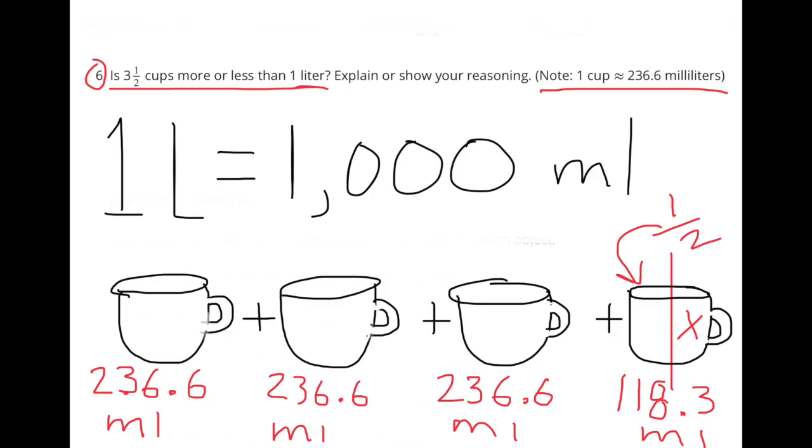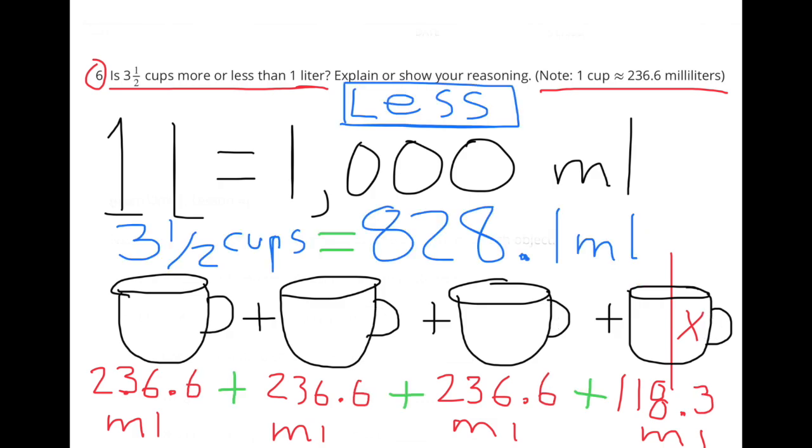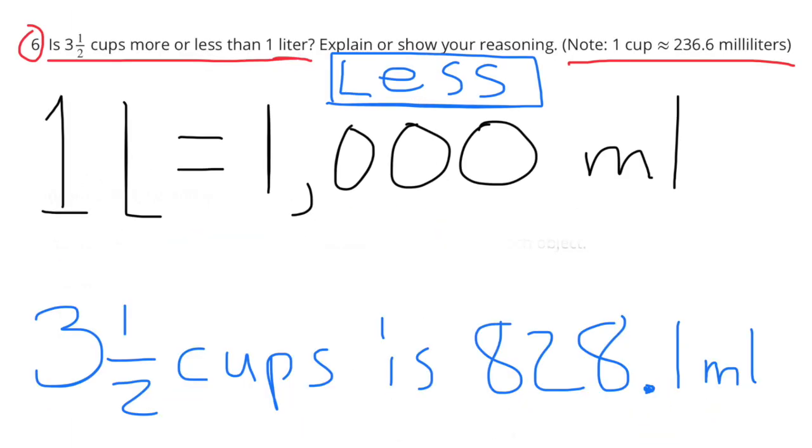When you add all those milliliters up, the 3.5 cups holds 828.1 milliliters, and that's actually less than 1 liter, because 1 liter is actually 1000 milliliters. 3.5 cups is less than 1 liter.